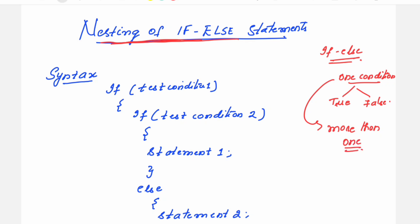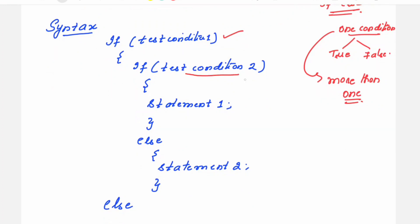More than one condition has to get tested here. In the syntax, we first check test condition 1. If the first condition is true, then we check the next condition — test condition 2. It is possible that if condition 2 is also true, you may test a third or fourth condition depending on the requirement. A series of conditions can be tested, but for this syntax demonstration, I am using two conditions.